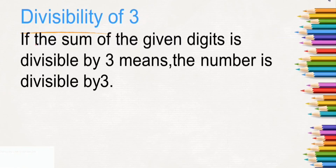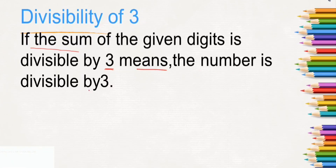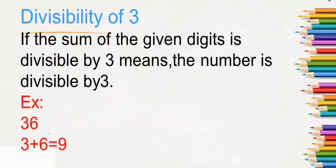Next, divisibility of 3. If the sum of the digits of the given number is divisible by 3, then the number is divisible by 3. For example, 36. When you split 36 into its digits, it will be 3 and 6. When you add 3 and 6, the sum will be 9.